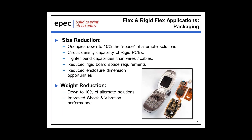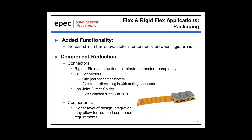Weight reduction follows a similar ratio — approximately 10% of alternative solutions such as wire cables and stacking connectors. As a byproduct of weight reduction, there is a substantial improvement in shock and vibration performance. Flex and rigid flex also create the opportunity to include added functionality, with an increased number of interconnects between rigid areas within a rigid flex. They provide the opportunity to reduce component requirements — specifically connectors. In the majority of cases, flex and rigid flex constructions eliminate the requirements for connectors entirely.